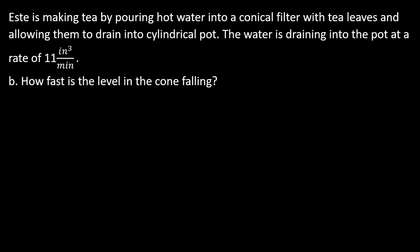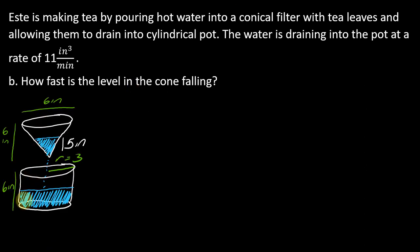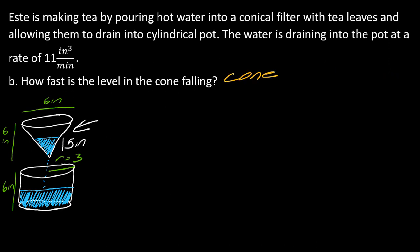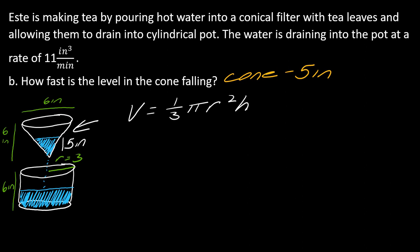Now part two: how fast is the level in the cone falling? We're now specifically talking about the cone. The problem stated the water in the cone is 5 inches deep — we'll need that. The volume of a cone is V = (1/3)πr²h.